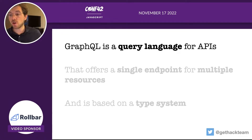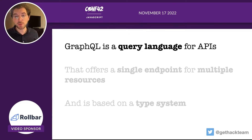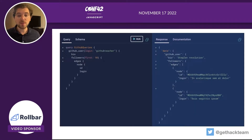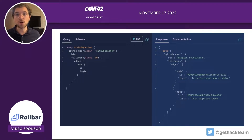GraphQL is what they call a query language for APIs. It's not a framework, it's not specifically tied to JavaScript — it can be used with any programming language. It's most of all a query language, and how you implement it is up to the implementation you use. You can use Node.js, TypeScript, Python, PHP, Go, Scala, Java — whatever you like.